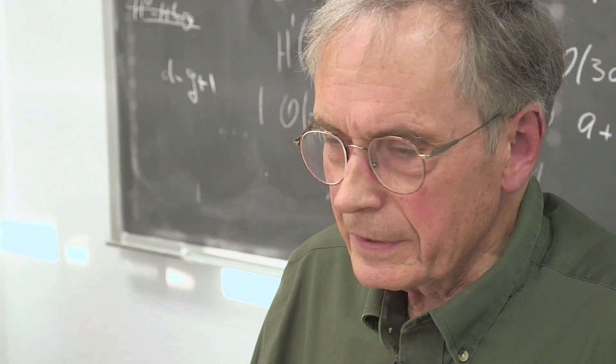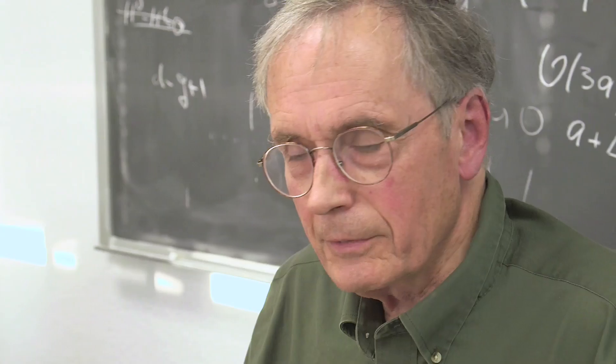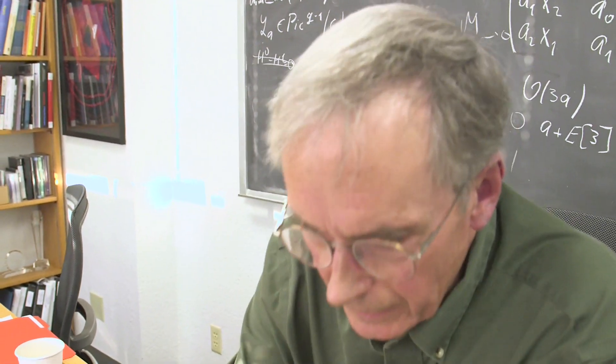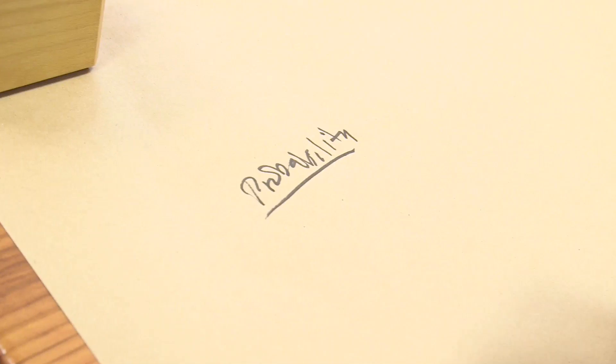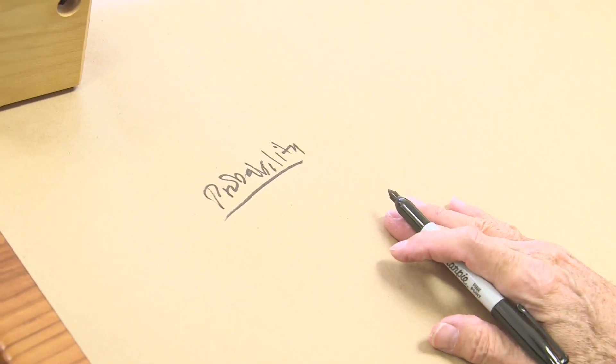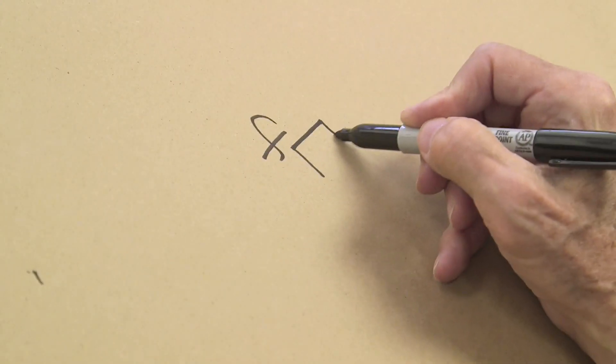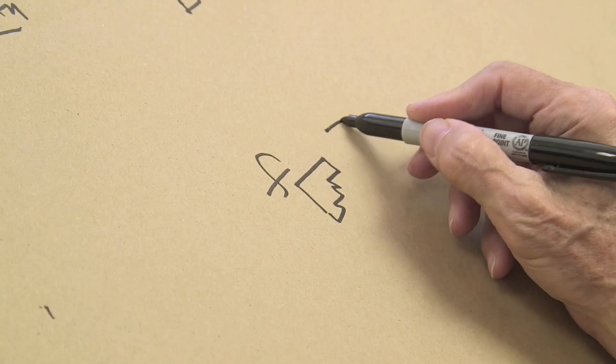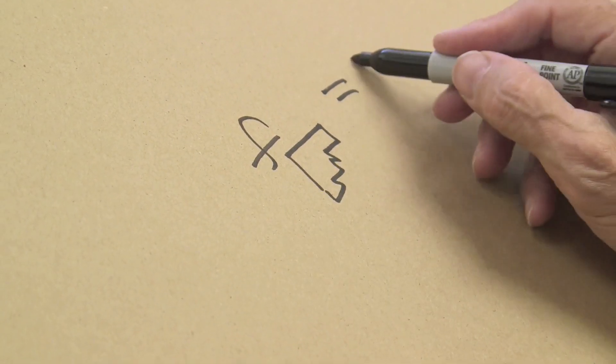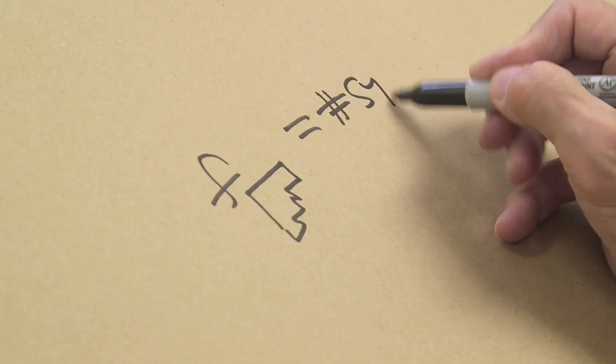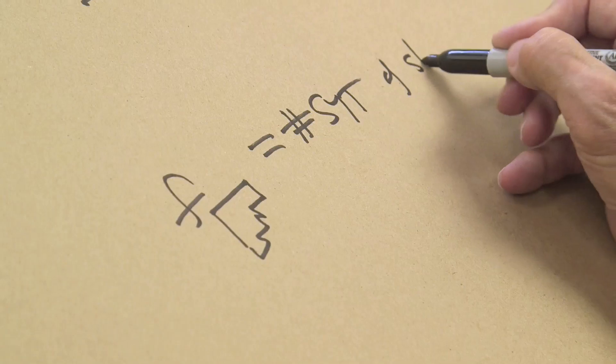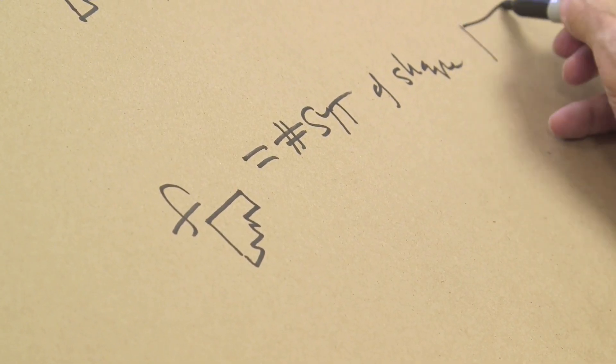I want to talk a bit about the process of proving that this result is correct. The first thing, a truly wonderful proof is based on probability. This is the best proof, really. I'm going to use this notation: F sub shape, where that represents a generic shape, equals number of standard Young tableaux of that shape.